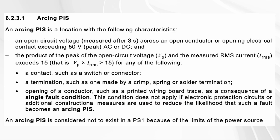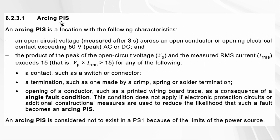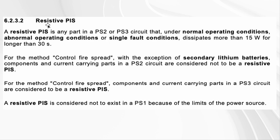The standard provides more information about arcing and resistive ignition — the two main types of potential ignition sources. Arcing can occur due to open circuit voltage or other causes. A resistive potential ignition source dissipates more than 15 watts for longer than 30 seconds.